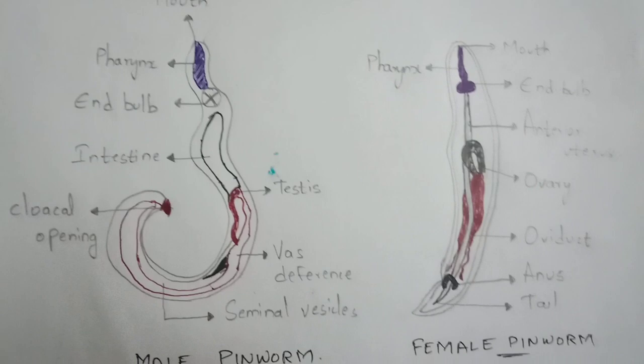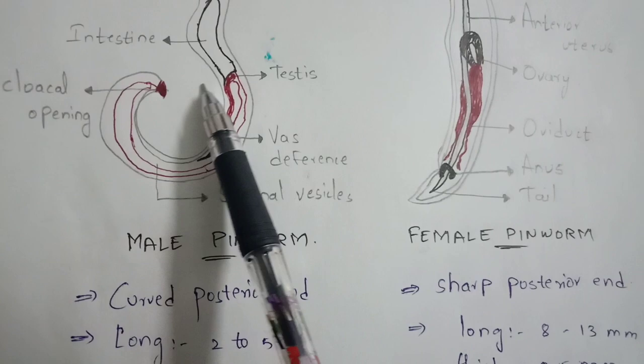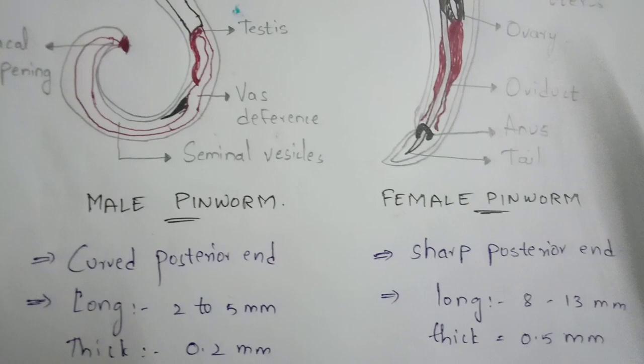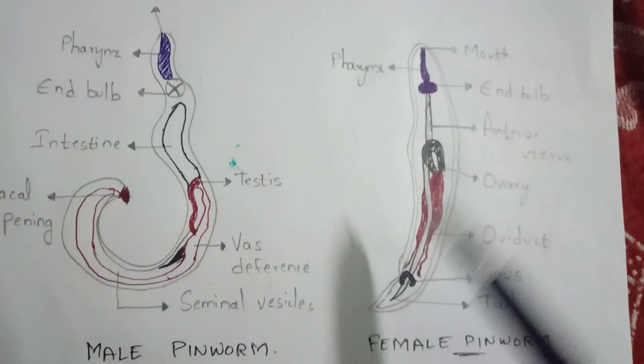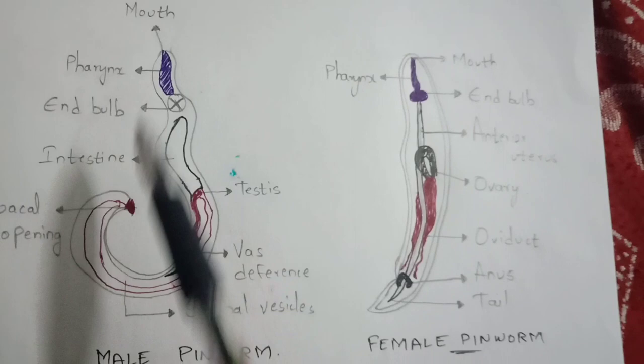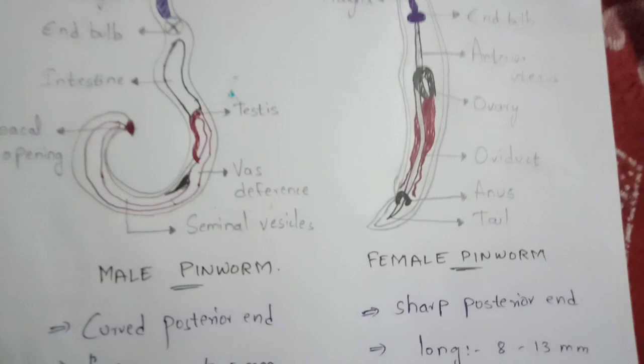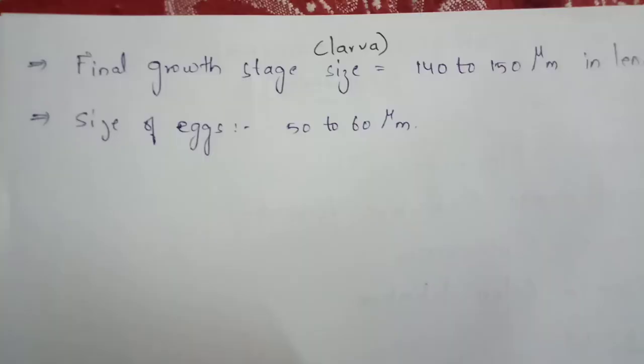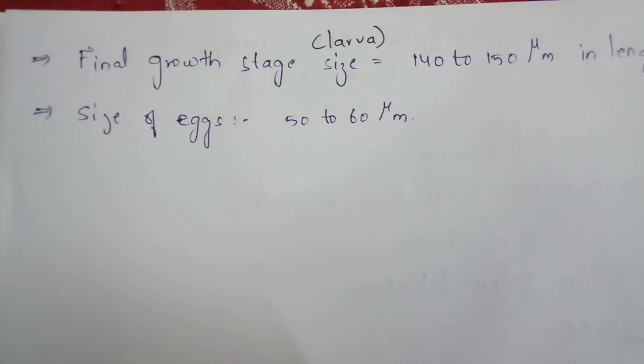The male pinworm has a curved posterior end. In terms of size, it is 2 to 5 millimeters long and 0.2 millimeters thick. The female pinworm has a sharp posterior end, with the mouth at the anterior end and the anus at the posterior end. The size of the female worm is 8 to 13 millimeters long and 0.5 millimeters thick.